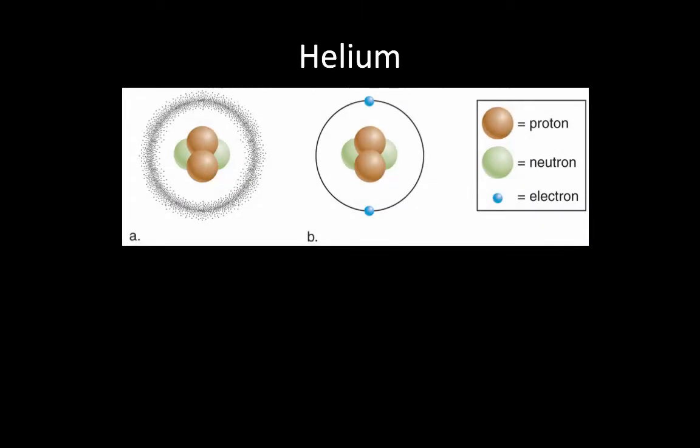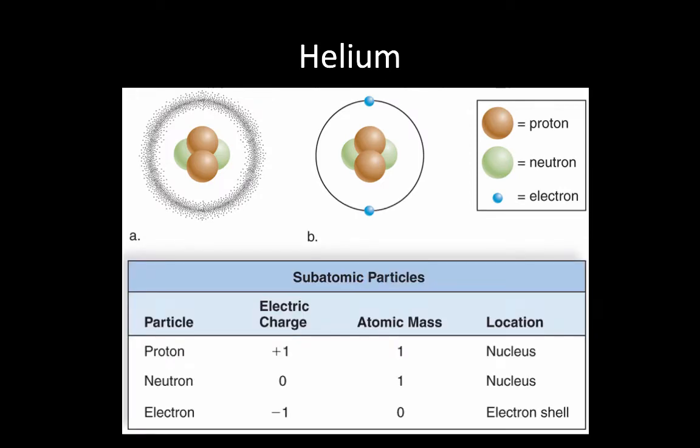The smallest component of an element that still retains the qualities of that element is called an atom. Atoms in turn are composed of smaller particles themselves called subatomic particles. Here we have two different models of the helium atom. From junior science, we know that the protons have an electric charge of plus 1 with a mass of 1 and are located in the nucleus.